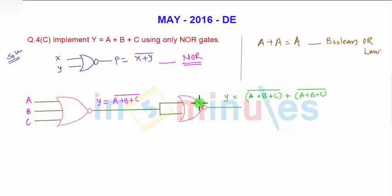Since A + A = A, the final expression Y will equal (A + B + C)'' - a single complement from the first NOR gate and a double complement from the second NOR gate. We know that the complement of a complement is the same, so it equals A + B + C. We have implemented Y = A + B + C using only NOR gates.